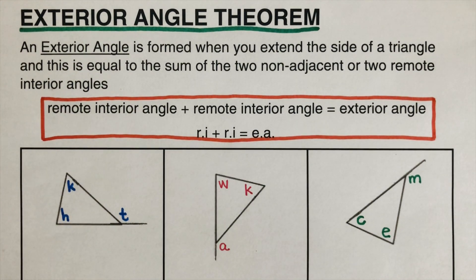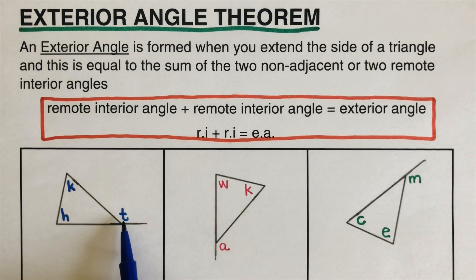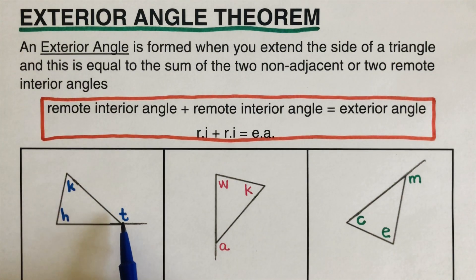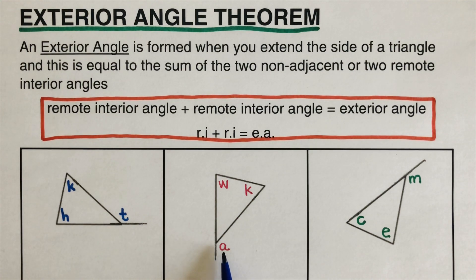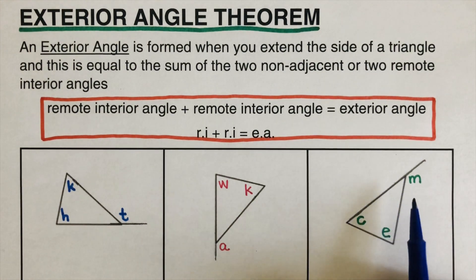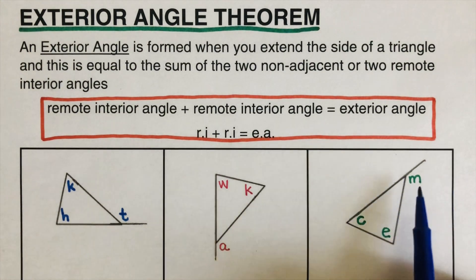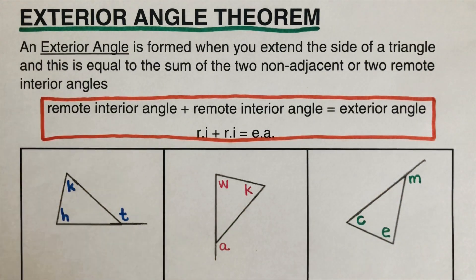So first, when we say exterior angle theorem, that means it is on the outside. In this triangle, the exterior angle is letter T. In this triangle, the exterior angle is letter A. And in this triangle, the exterior angle is M. Exterior means on the outside.